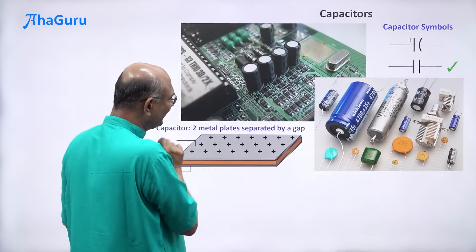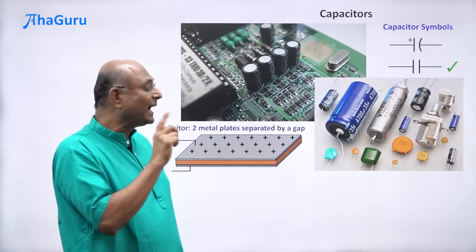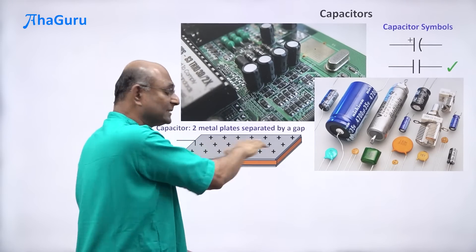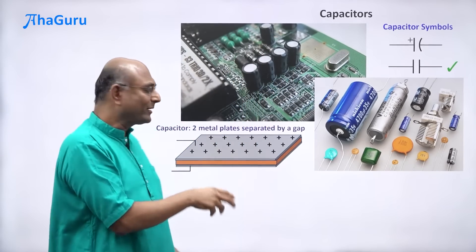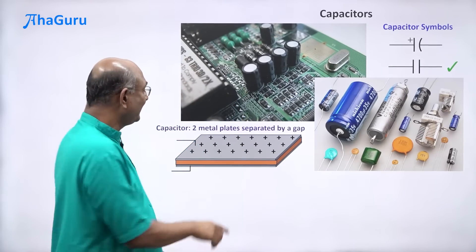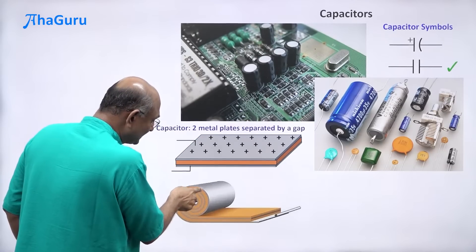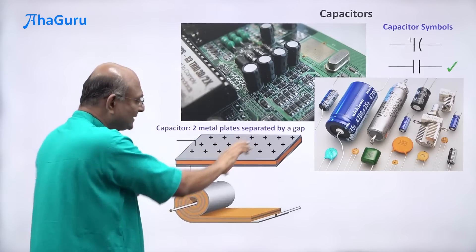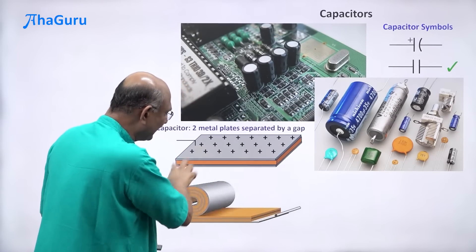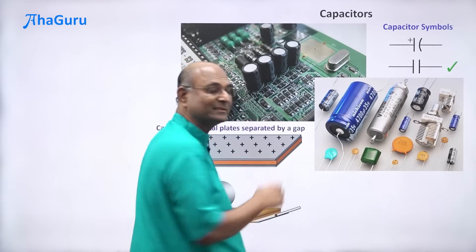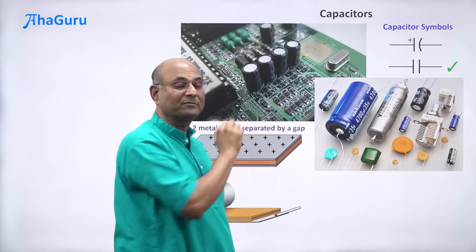But wait — if this is how a capacitor looks, none of the real ones look like flat plates; they look like cylinders. Because if I want a decent capacitor, I must have a large sheet, and a small electronic object can't accommodate such a large sheet. So what we do is take the sheets and roll them up like a carpet — metal sheet, then dielectric, then metal sheet, all rolled up. Once combined and covered up, it starts looking like a cylinder.